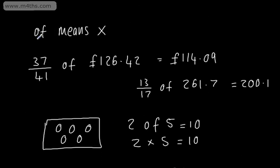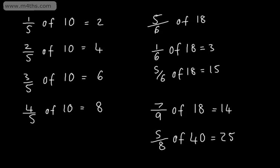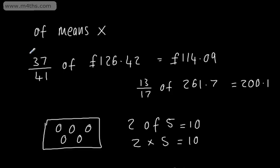So, two different ways, calculator and non-calculator. If it's non-calculator, divide by the bottom times by the top of your fraction and then if it's a calculator one, simply put the calculation through the calculator, swapping of for the multiply.